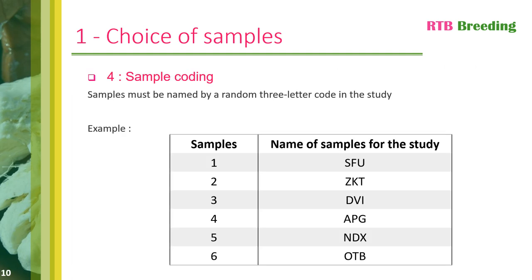Point number four concerns the coding of samples. Once you have chosen the samples you wish to study, you will need to rename them for the QDA and consumer tests. The samples must all be named using a random three-letter code. For the same sample, the code must be the same for the QDA analysis and the consumer tests. In this table, you have an example of six samples initially numbered from one to six, each of which has been assigned a three-letter code.